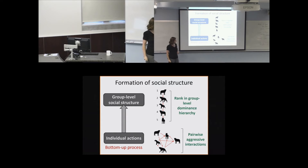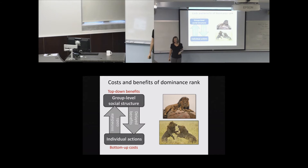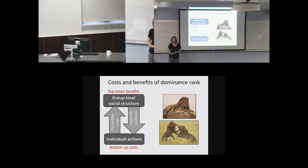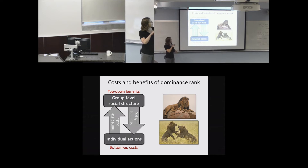These pairwise aggressive interactions can be summarized mathematically into a rank for each individual in the group-level dominance hierarchy—you can see that individuals are ranked in a dominance order. There are several costs and benefits to both establishing and benefiting from rank. The energetic investment in interacting aggressively and challenging other individuals can be quite significant, and individuals can sometimes be gravely injured in these contests. So there is a strong immediate cost to interacting aggressively.